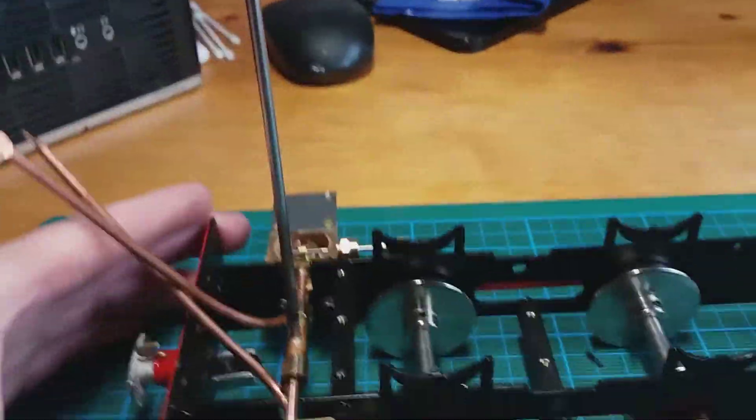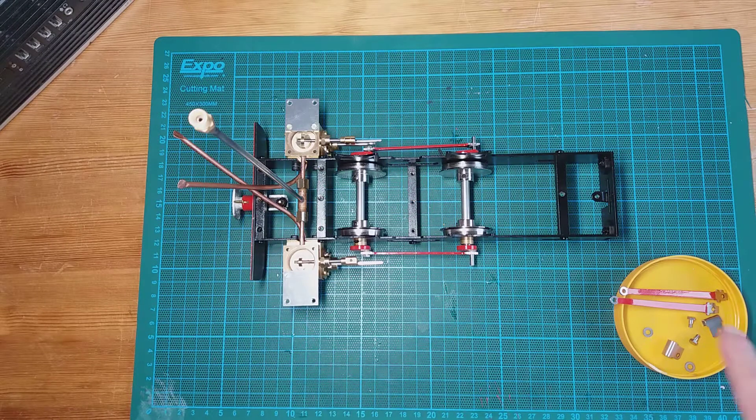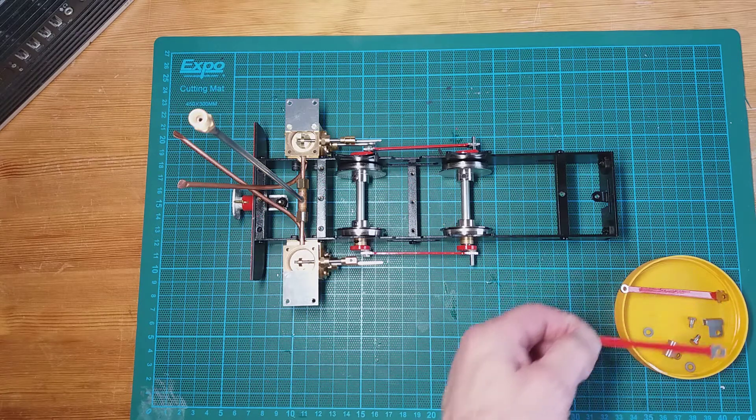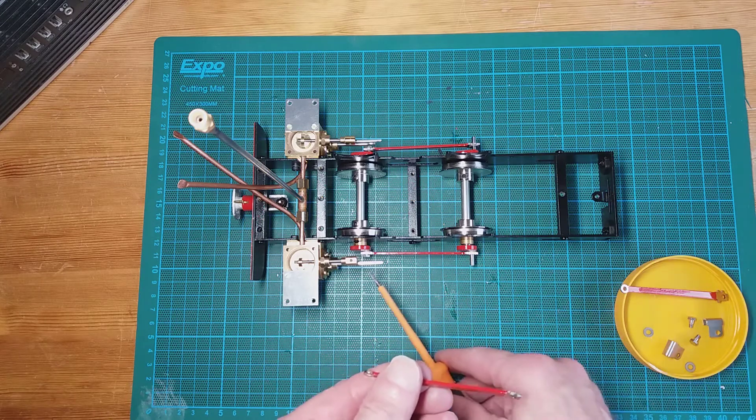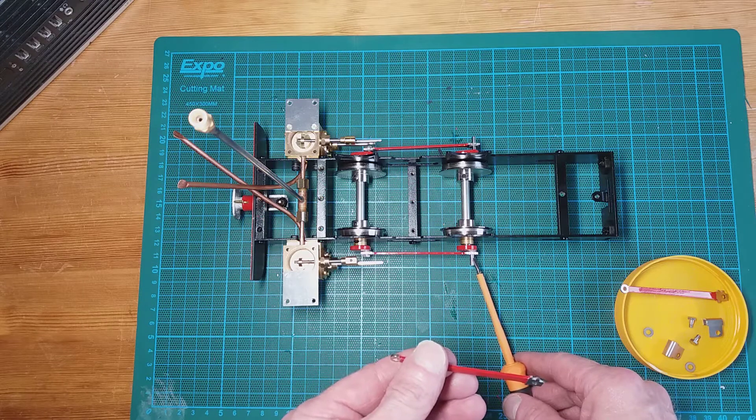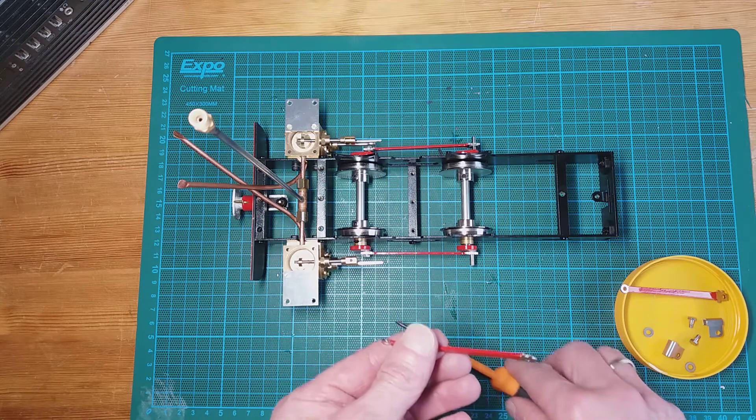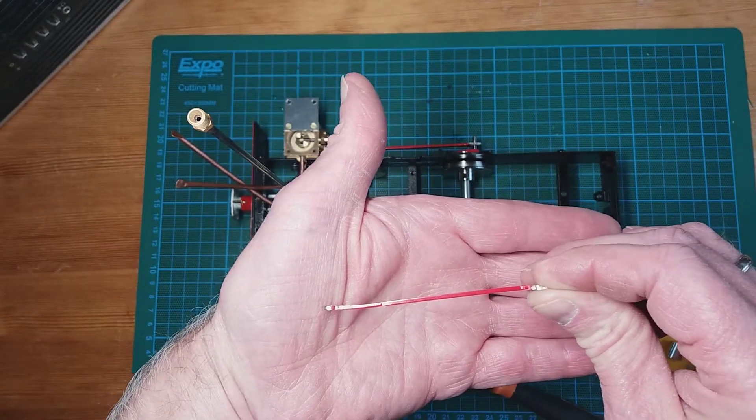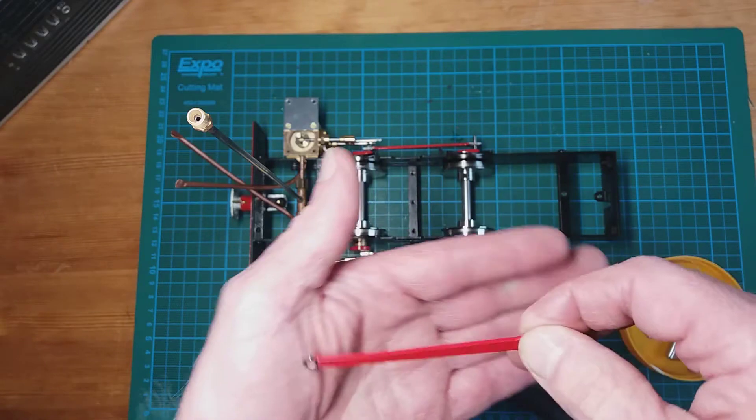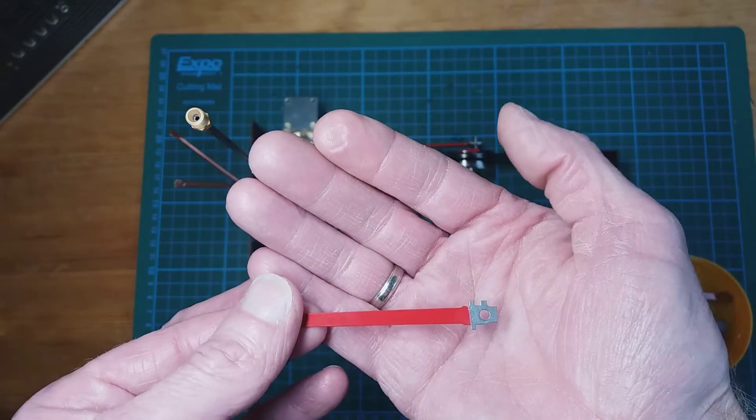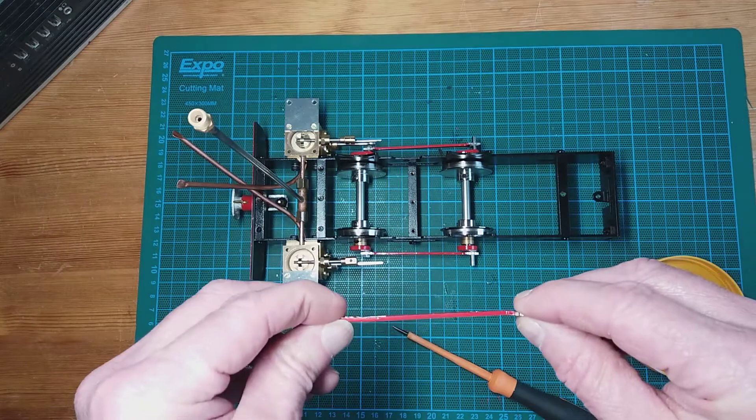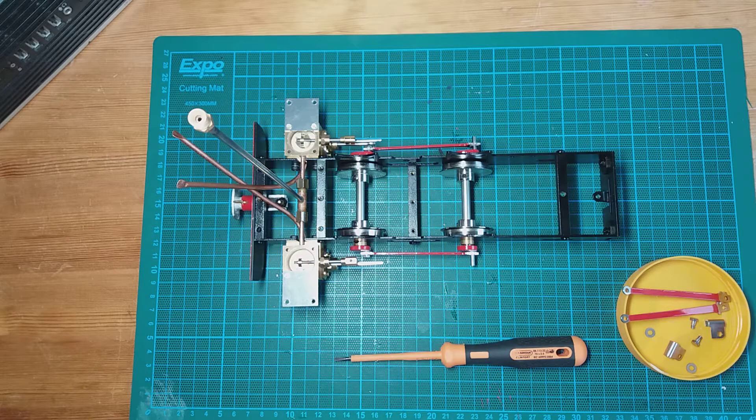The connecting rods fit on the rear crank pin. If I bring this up to the camera, you can see the connecting rod is offset, so there is a right and a left. Just like the coupling rods, there's two lugs at the top that must always face upwards, so there is a left and a right.